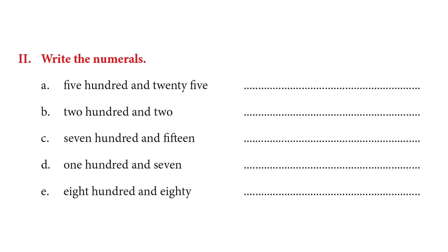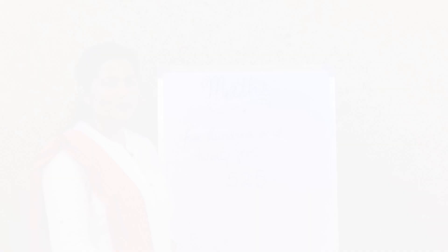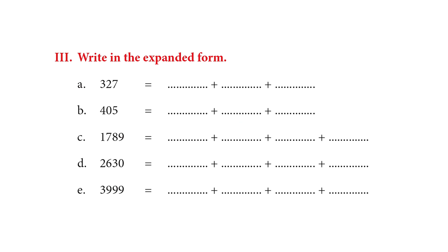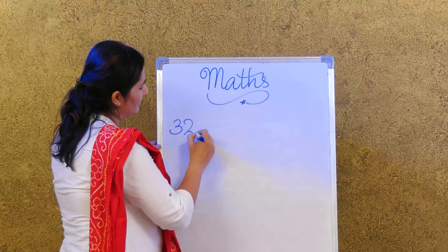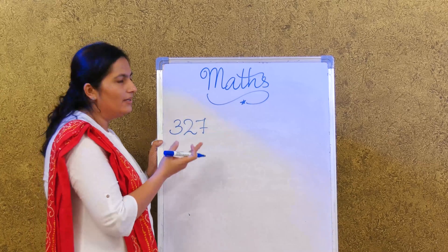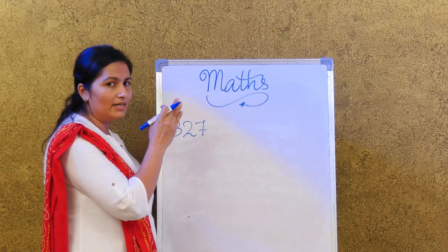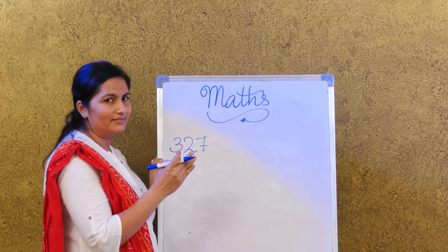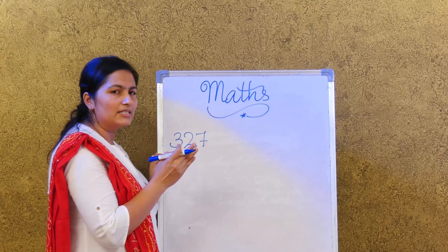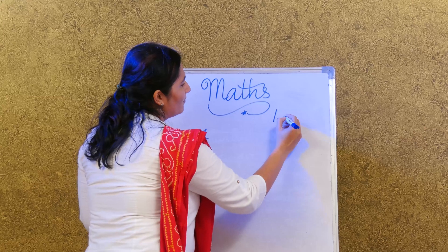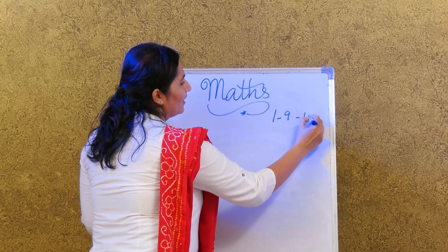Exercise number 3: write in expanded form. We were doing it just now, but there are some exercises to remind us. Let's see how much we remember — 327. We learnt that a 1-digit number is 1 to 9.